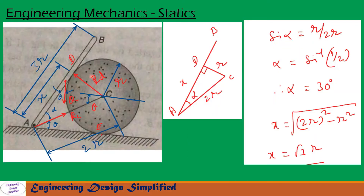First, let us see the forces and reactions. The weight of the prismatic bar Q is acting vertically downwards from the center of the bar. There is a reaction in the string RC acting as shown in the figure, and reaction RD at point D on the prismatic bar acting perpendicular to bar AB.